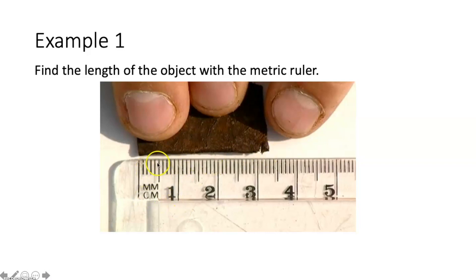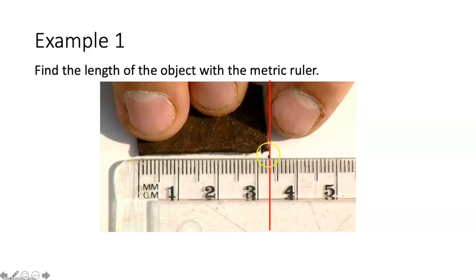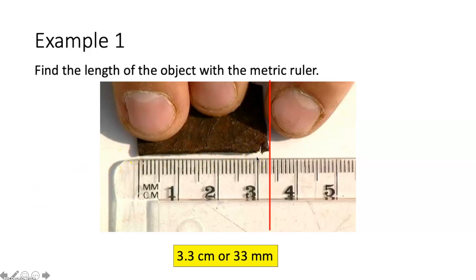Measuring this piece of rusted metal, we count across and get 33 millimeters. But if we want to write that in centimeters: the metal is a little more than 3 centimeters. Since there are 10 millimeters in every centimeter, those 3 extra millimeters are three-tenths of a centimeter. So the length could also be written as 3.3 centimeters. Both ways are acceptable. Got a lasso on that concept? You try.